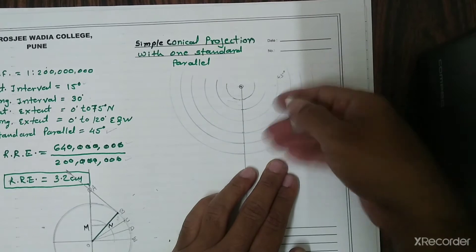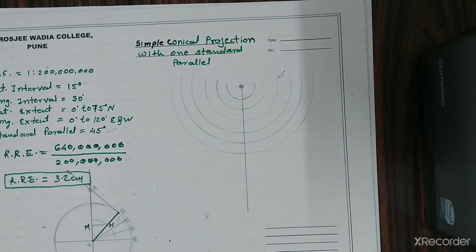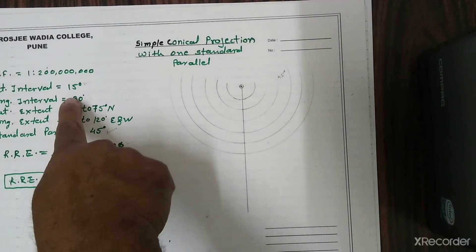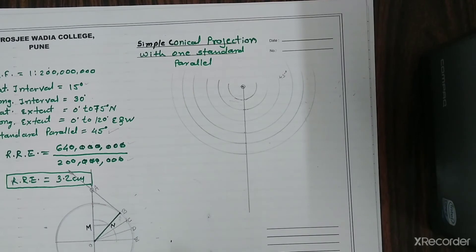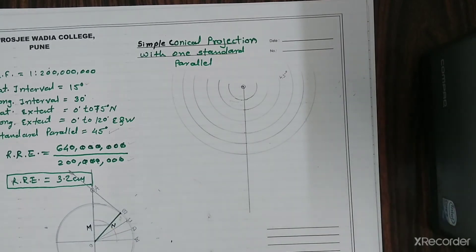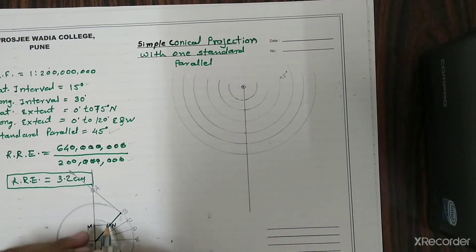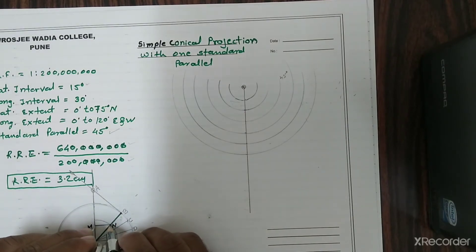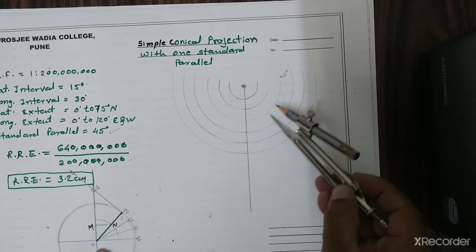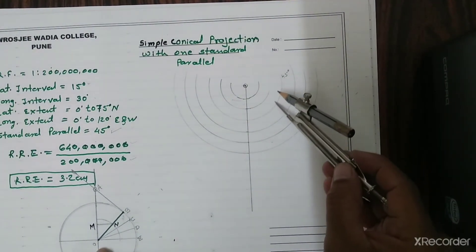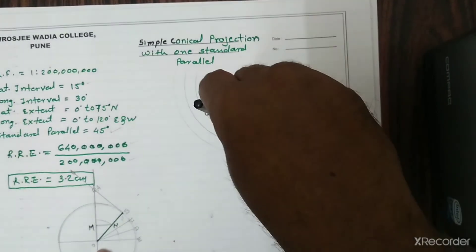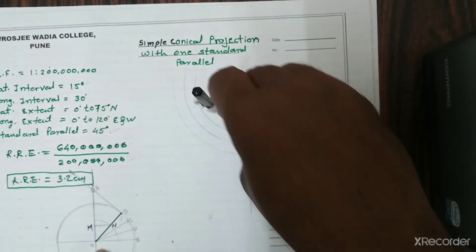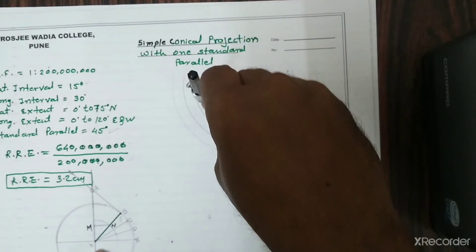Now we need to plot the longitudes using the 30-degree interval. For this we use the M-to-N distance — not C-to-E. I put the compass to take the M-to-N distance, and wherever the 45-degree standard parallel arc intersects, I mark the longitudinal points.